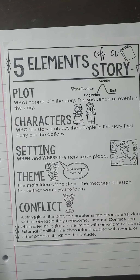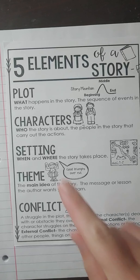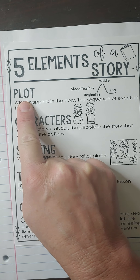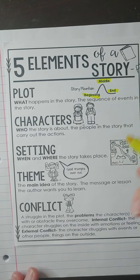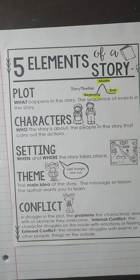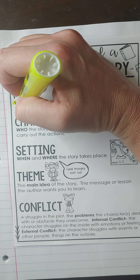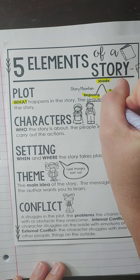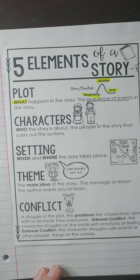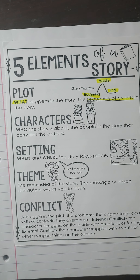Here are the components, so let's break them down. The first component is called plot, and we're going to be working on this this week and next week. Plot is like the beginning, the middle, and the end — I used to call it the BME. The plot is what is happening in the story, what is going on. It's also the sequence of events: the beginning, the middle, and the end. So the plot is kind of like the baseline of the story — what's going on, what's happening.